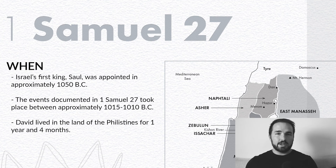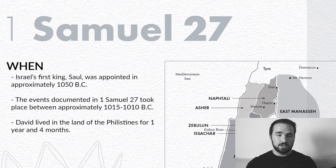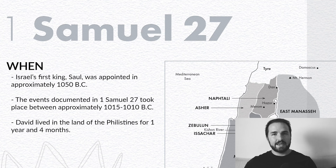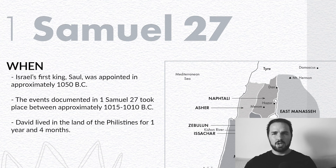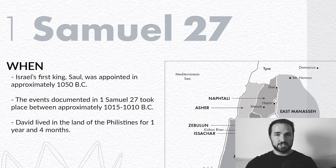On our outline, we need to first answer our question: when did these events happen in history? Well, this would be between the years of approximately 1015 BC and 1010 BC. Saul has been the king of Israel for quite a while now, and his reign is coming to an end. He's chasing David down. We're going to talk about David living in the land of the Philistines, and we're told that he lived there for a year and four months.